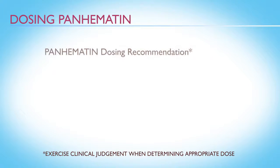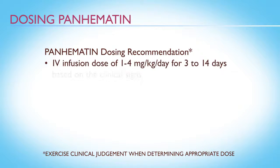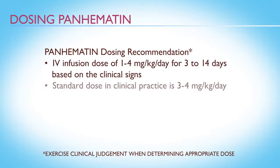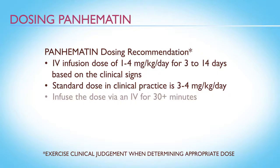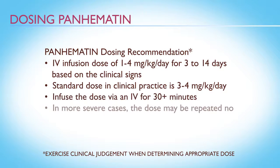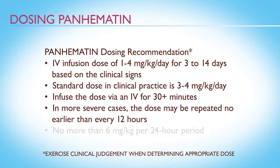The dosing recommendation for Panhematin is 1 to 4 mg per kg per day for 3 to 14 days based on clinical signs. In clinical practice, the standard dose is 3 to 4 mg per kg per day. The dose should be infused via IV over a period of at least 30 minutes. In more severe cases, the dose may be repeated no earlier than every 12 hours. No more than 6 mg per kg should be given in any 24-hour period. Physicians should exercise their clinical judgment when determining the appropriate dose.